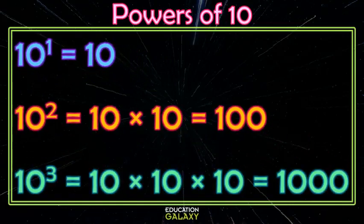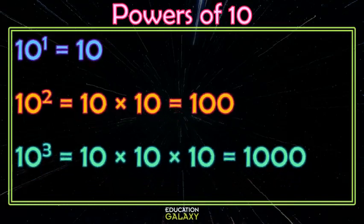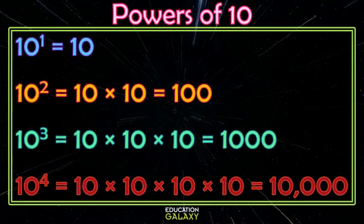And if you could guess, 10 to the third is 10 times 10 times 10, so 3 of those. And of course, 10 to the fourth would be 4 tens. Not 10 times 4. It's 10 times itself 4 times.